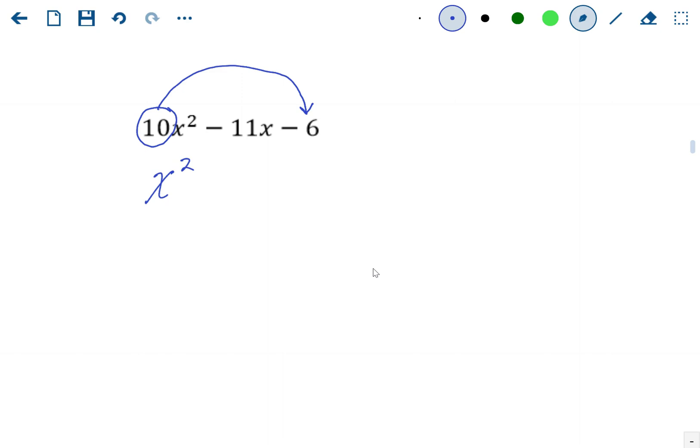It makes it x squared minus 11x minus 60. Now this is a problem we can factor pretty easily. Product sum. We're looking for two numbers, and product sum only really works when there's a 1 in front. Now, we're looking for two numbers that are going to multiply to negative 60.